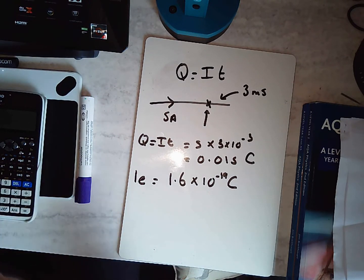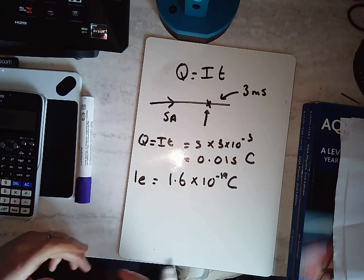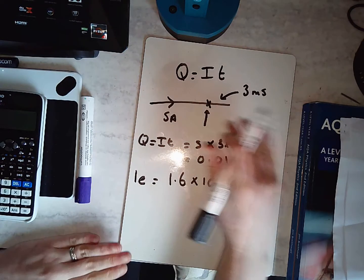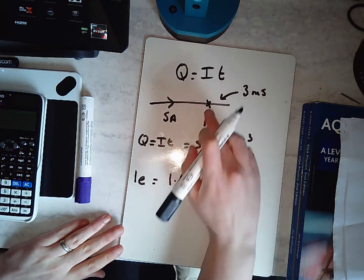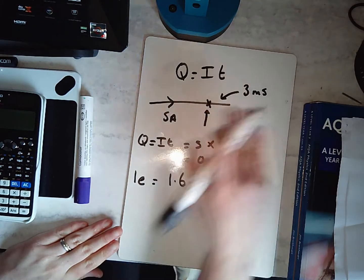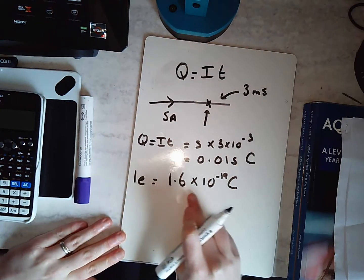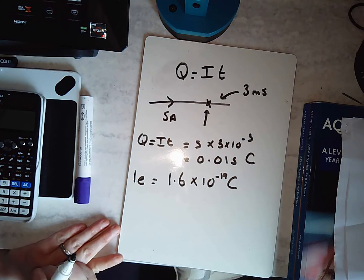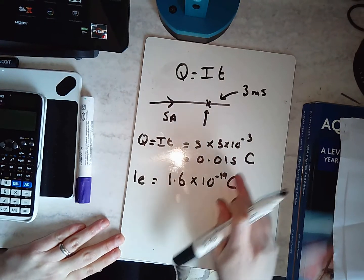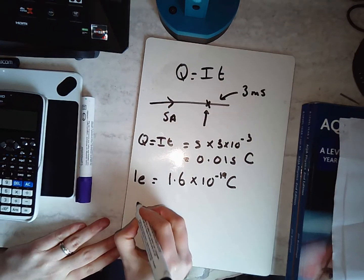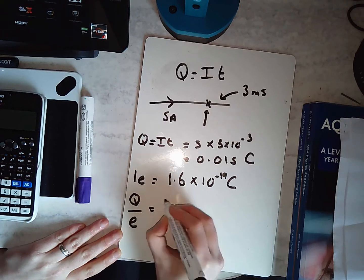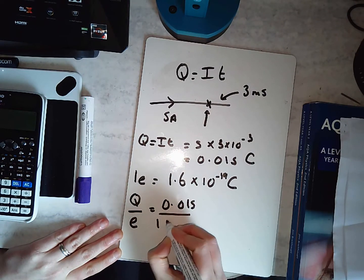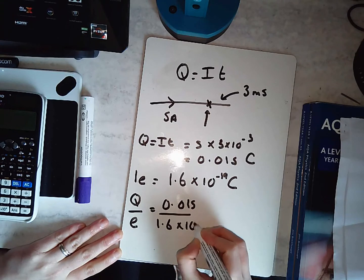The current relates down to how many electrons are passing. What we can do is actually find out how many electrons have passed this point in 3 milliseconds. I know this much charge is at this point in 3 milliseconds, and I know one electron has this charge. So I want to find out how many electrons made up this total charge. I'm going to take the total charge and divide it by the charge of one electron.